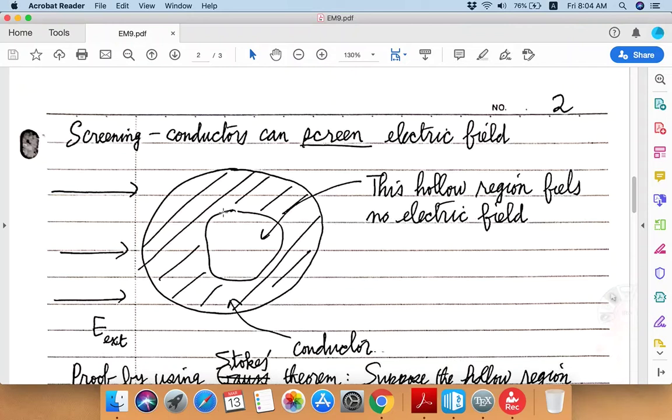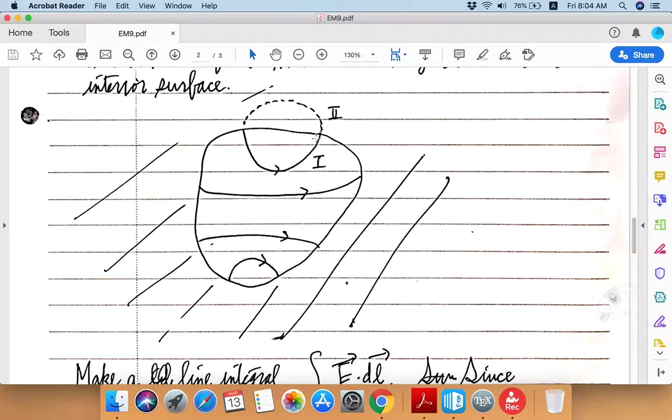Then the electric field better start from some point on the interior surface—by interior surface I mean this surface—this electric field must start from some point on the interior surface and must also end at some other point on the interior surface. And examples are like this line here and this line here. These lines I mean, I'm just drawing them as illustrations. Okay, so suppose such a field distribution did exist inside the hollow region of conductor.